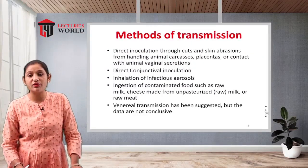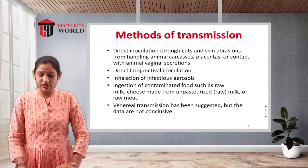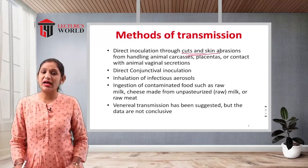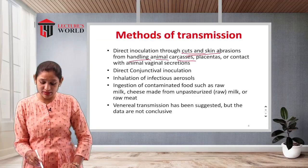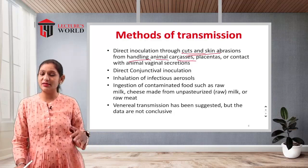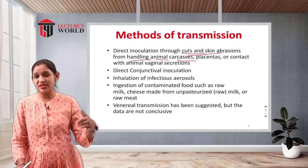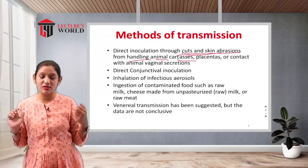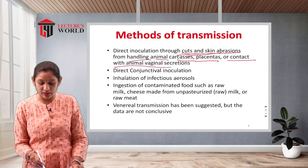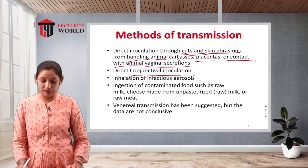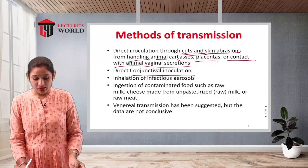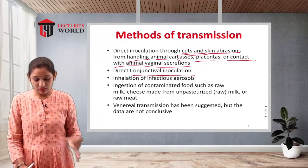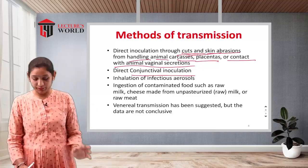Methods of transmission include direct inoculation through cuts and skin abrasions. Abrasions refer to abnormal skin cuts or rashes from handling animal carcasses or dead animal materials. Infection also occurs through contact with placentas or animal vaginal secretions, and through direct conjunctival inoculation.